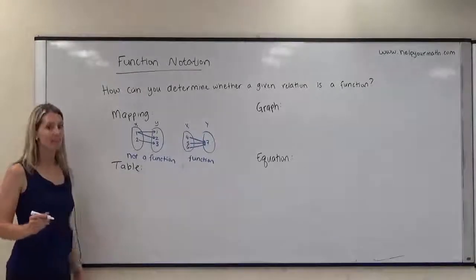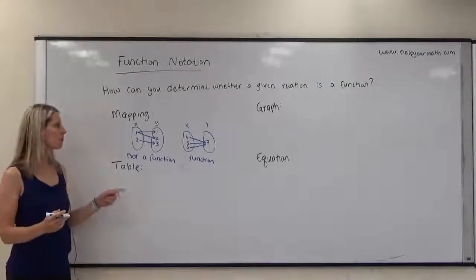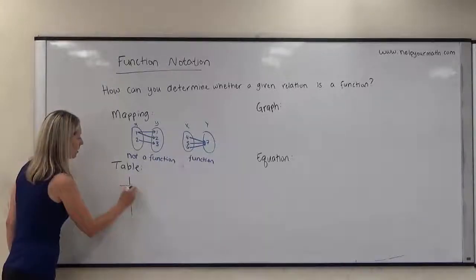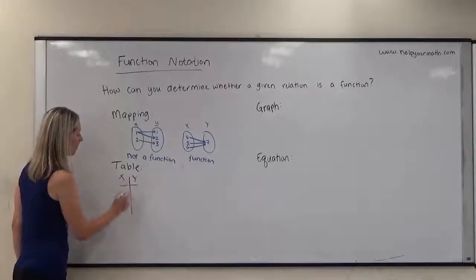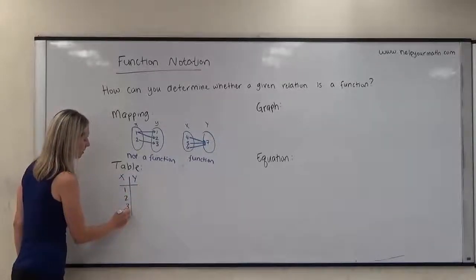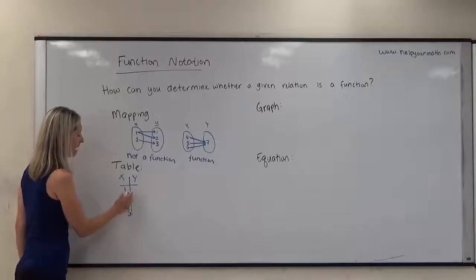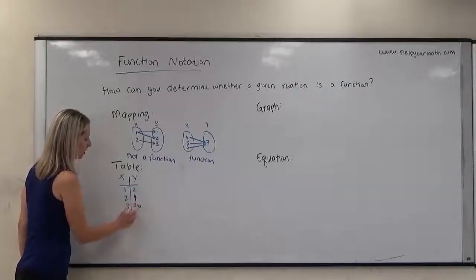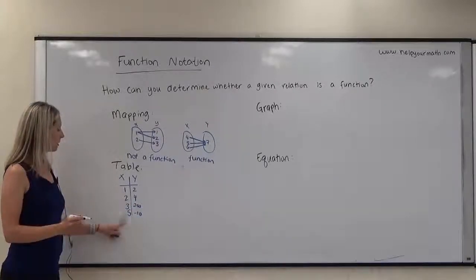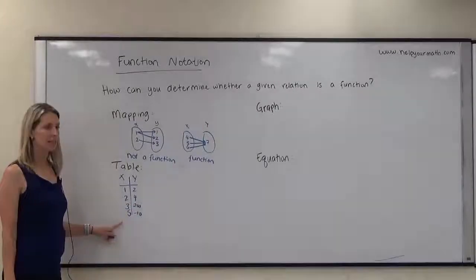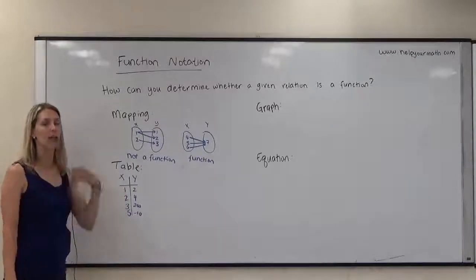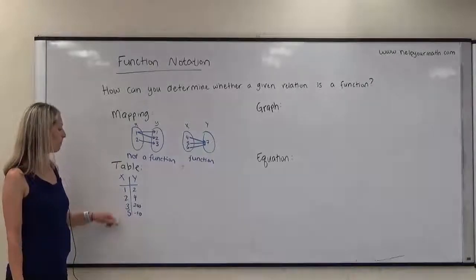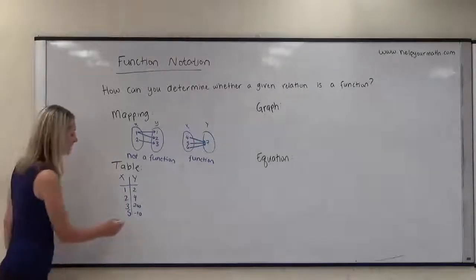We could also be given a table. If we're given a table, what we're looking for in the input or X values is: does anything repeat? So if my inputs are one, two, three, five, and my outputs are two, four, two hundred, negative ten — I'm looking to see if any of those X values repeat. Because if any of those repeat, that means one input is mapping to more than one output, which would not be a function. Since every input is unique in this table, we would say this is a function.